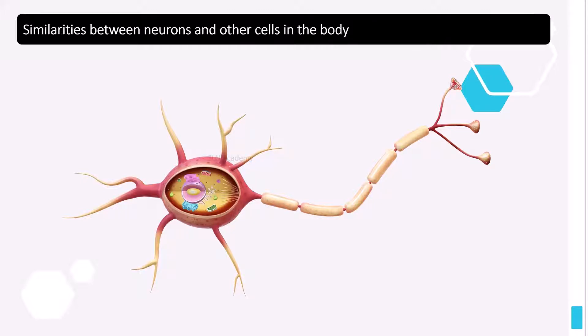Similarities between neurons and other cells in the body: neurons are surrounded by cell membrane, neurons have a nucleus. How is the nerve cell different from the other cell? Let us see the difference between neurons and the other cells in the body.